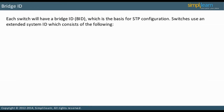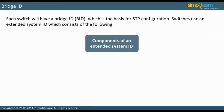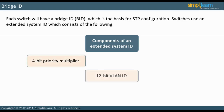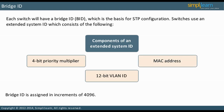Each switch has a bridge ID, which is the basis for STP configuration. Most switches use an extended system ID. This consists of a 4-bit priority multiplier, a 12-bit VLAN ID, and the MAC address. The bridge ID is assigned in increments of 4096. In the next slide, let us look at the root bridge, also called the root switch.